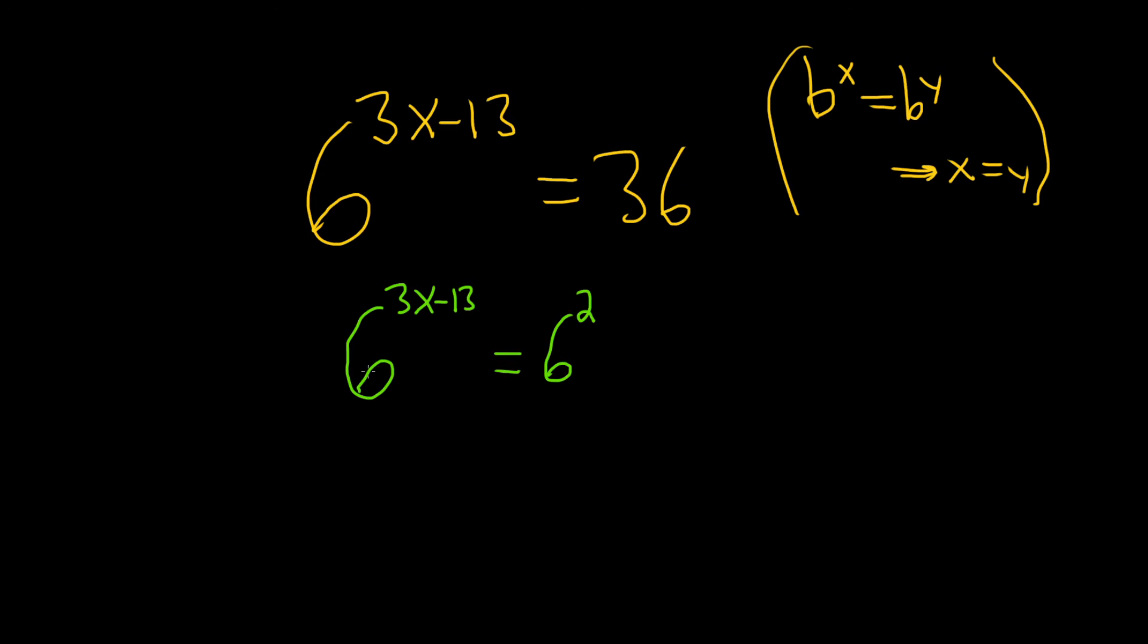Okay, so now we have the same base on both sides, so we can drop the 6s. The next step is 3x minus 13 equals 2.